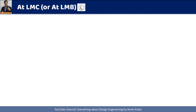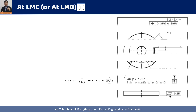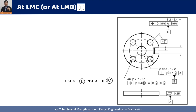The next modifying symbol is Least Material Condition (LMC) or Least Material Boundary (LMB). It is exactly similar to MMC, only in the opposite direction. I am taking the same example but replacing every M with L, so you can understand the difference.